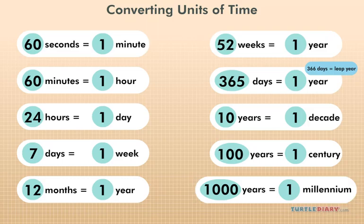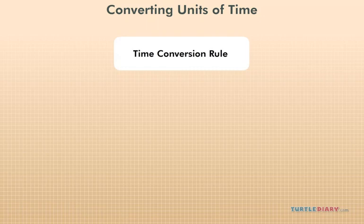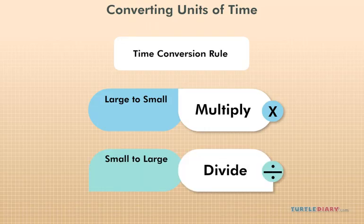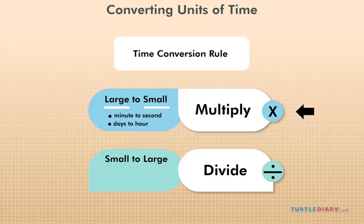When it comes time to actually do a conversion, follow this rule. Large to small: multiply. Small to large: divide. This means that if you are trying to take a larger unit and convert it to a smaller unit, you must multiply. But if you're starting with a smaller unit and converting it to a larger one, divide.